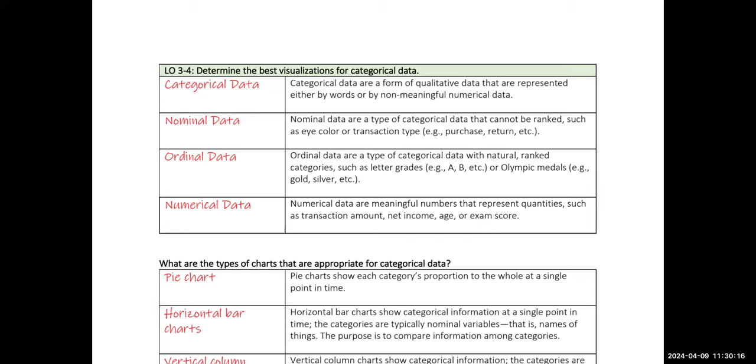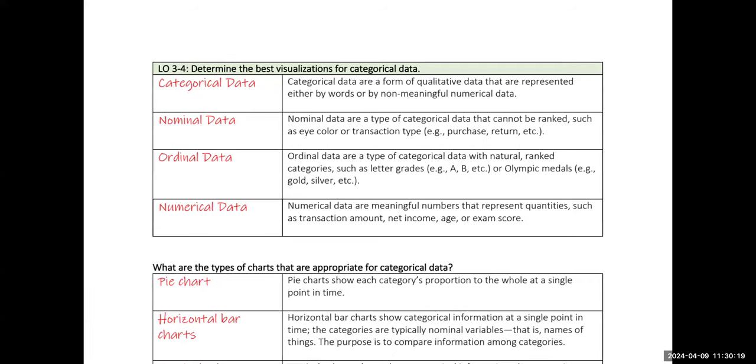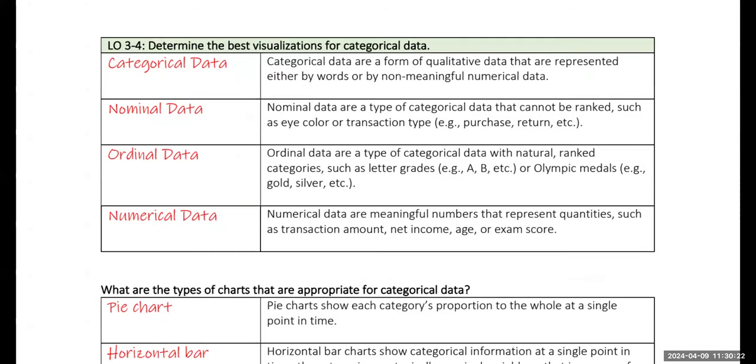So we've got three types of categorical data here on the notes for definitions. The first one is nominal data. And this is categorical data that cannot be ranked. So there is no ranking of priority. Even if you put everyone with brown hair in the category group one and everyone with black hair in the category group two, it doesn't necessarily mean that the brown hair is first and the black hair is second, like first place, second place. The order doesn't matter. That's what we call nominal data.